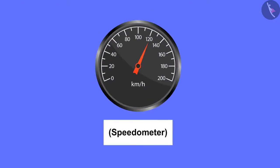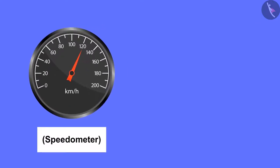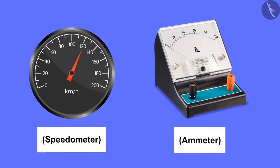Just as the speedometer is used to measure the speed of the vehicle, similarly in any circuit an instrument named ammeter is used to measure the electric current.